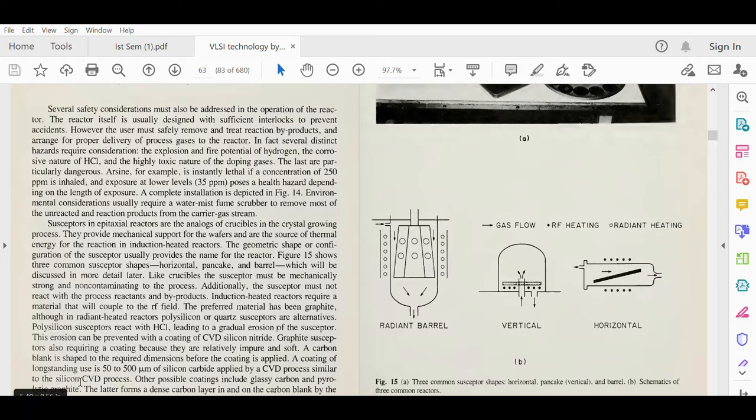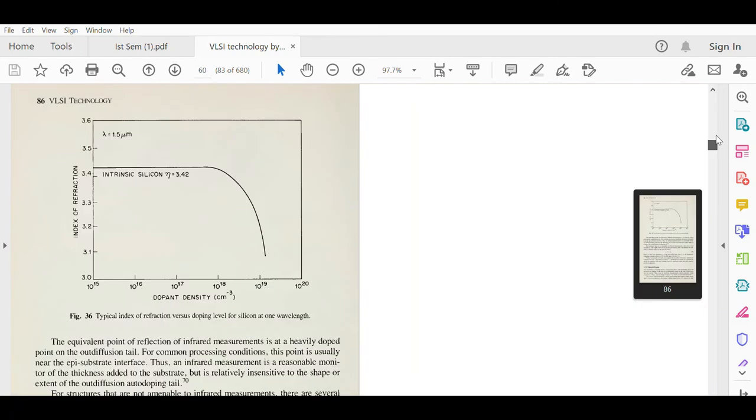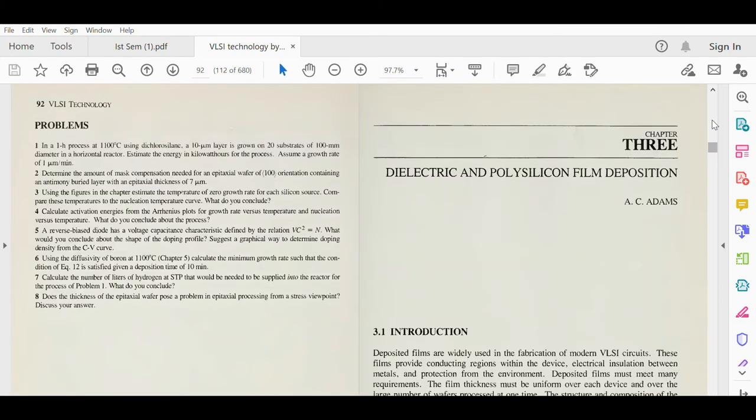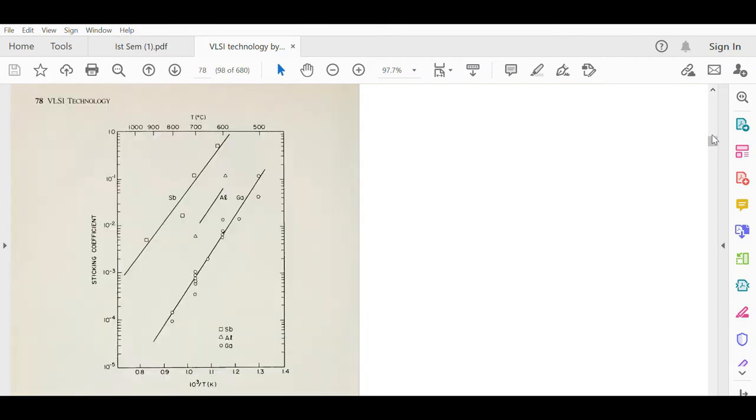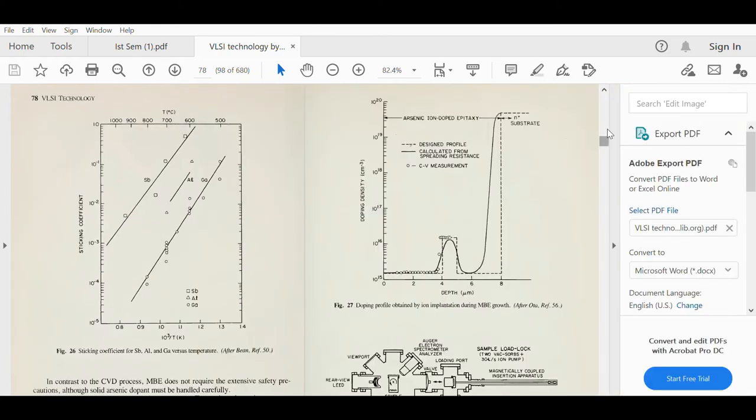Other possible coatings include glassy carbon and pyrolytic graphite. The latter forms a dense carbon layer in and on the carbon blank. Let us see this picture also.